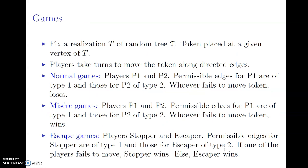In these combinatorial games, you fix a realization of the random tree. Capital T is a realization of the random tree script T, and the token is placed at any given vertex of this capital T — usually the root, but it can be any other vertex inside the tree. Capital T is known to both players, so these are full information games; the players know the structure of the entire tree. We also assume that the players play optimally: whichever player is going to win tries to win as quickly as possible, and whichever player is going to lose tries to prolong the game as much as possible.